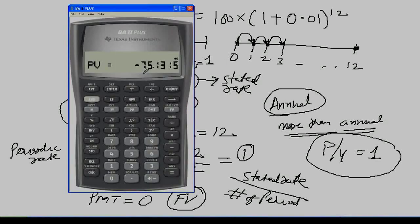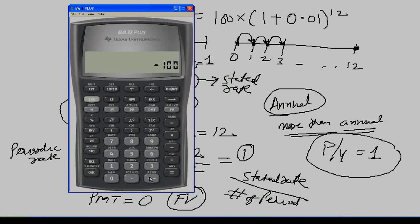Using the calculator: clear earlier TVM work with Second CLR TVM. Enter N = 12, I/Y = 1 (which is the stated rate 12 divided by 12 periods), PV = -100 (since you are depositing), PMT = 0, then compute FV. The value comes as 112.68. So if you invest $100 for one year at 12% compounded monthly, you get $112.68.